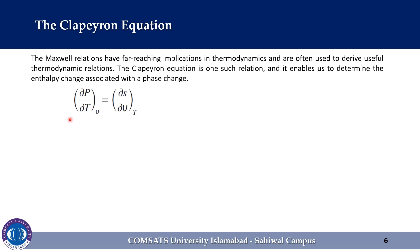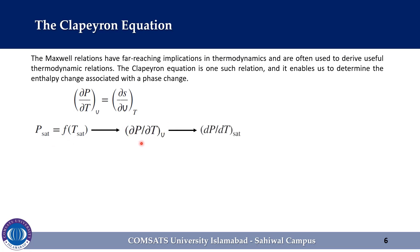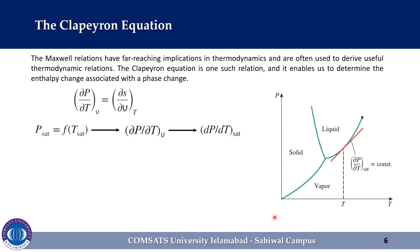During a phase change process, the pressure is the saturation pressure, which depends on the temperature only and is independent of the specific volume, so we can express it as saturation pressure is a function of saturation temperature only. Therefore, the partial derivative partial p over partial T while v is held constant can be expressed as a total derivative dp over dT, which is the slope of the saturation curve on the pT diagram at a specified saturation state. This slope is independent of the specific volume and thus it can be treated as a constant during the integration of the above expression between two saturation states at the same temperature.